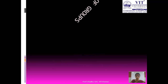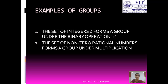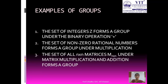Now let us see some examples of groups. The set of integers Z forms a group under the binary operation plus, where 0 is the additive identity and for any integer a, minus a is its additive inverse. The set of non-zero rational numbers forms a group under multiplication, where 1 is the multiplicative identity and 1 by a is the multiplicative inverse of a. The set of all n by n matrices under matrix multiplication and addition always forms a group.